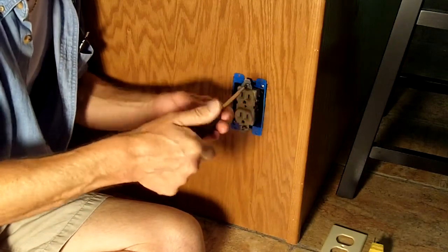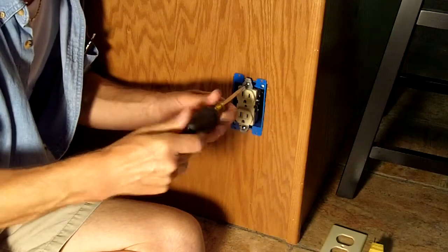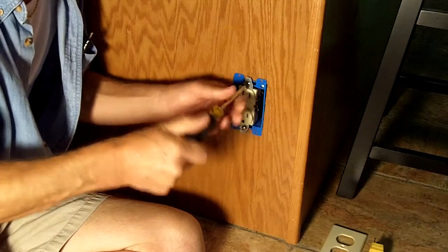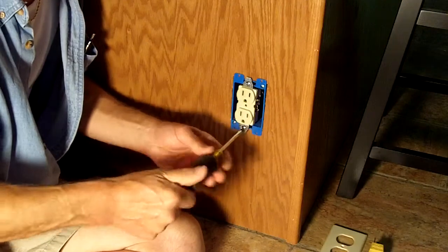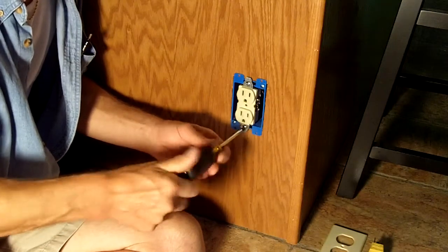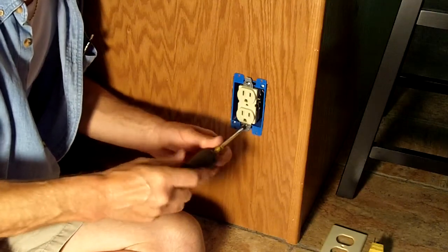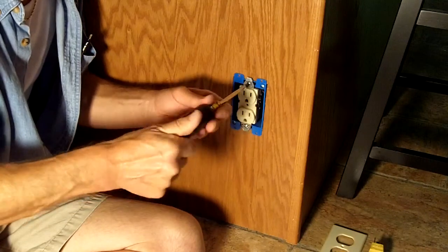You want to make sure that's folded back in there nice and neatly so it doesn't get pinched when you tighten this, when you screw this thing back into the box. I'm going to show you the trim plate in a second.